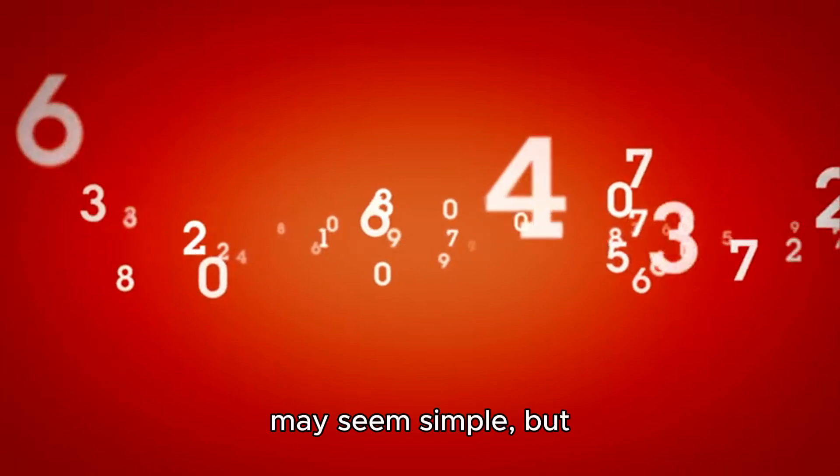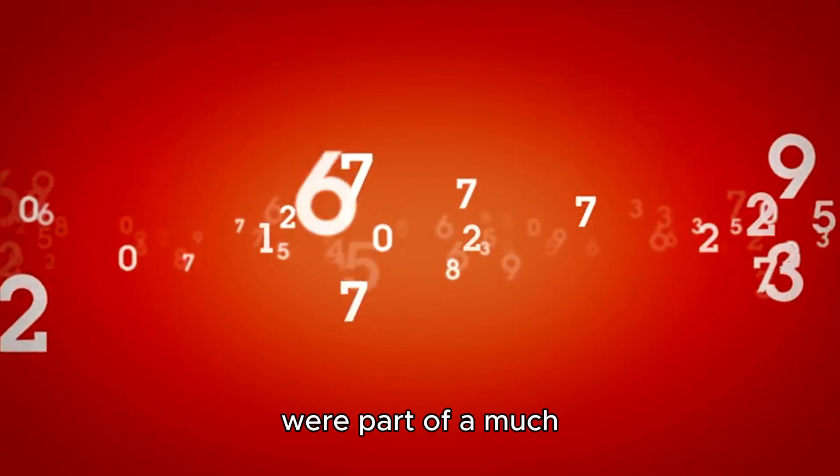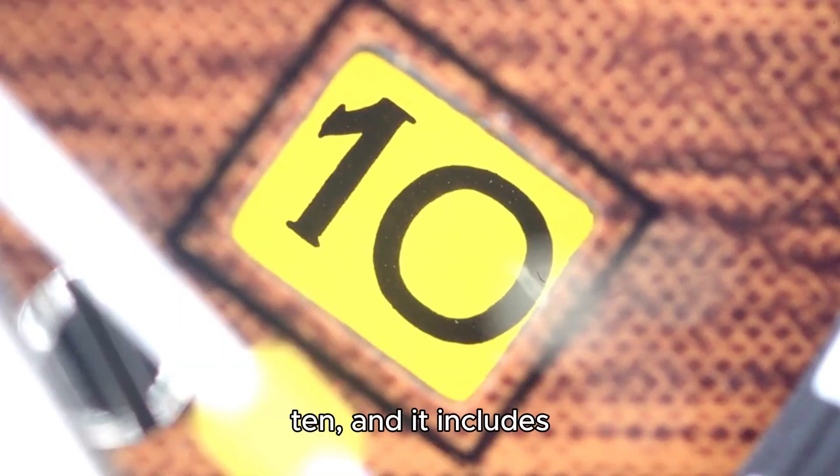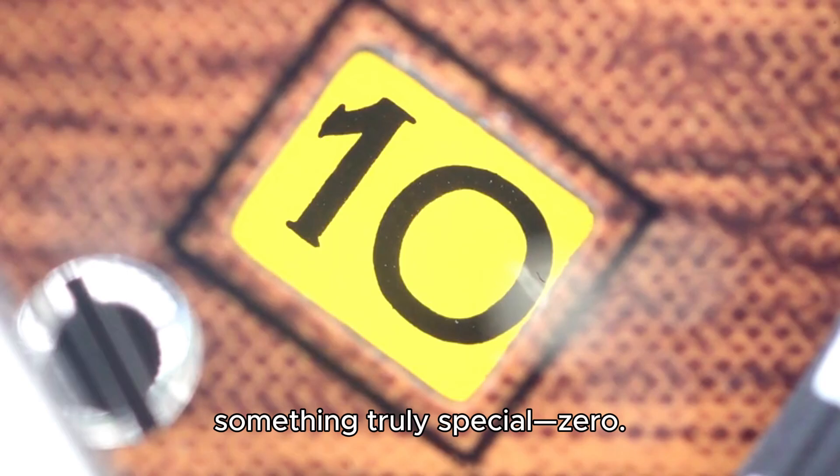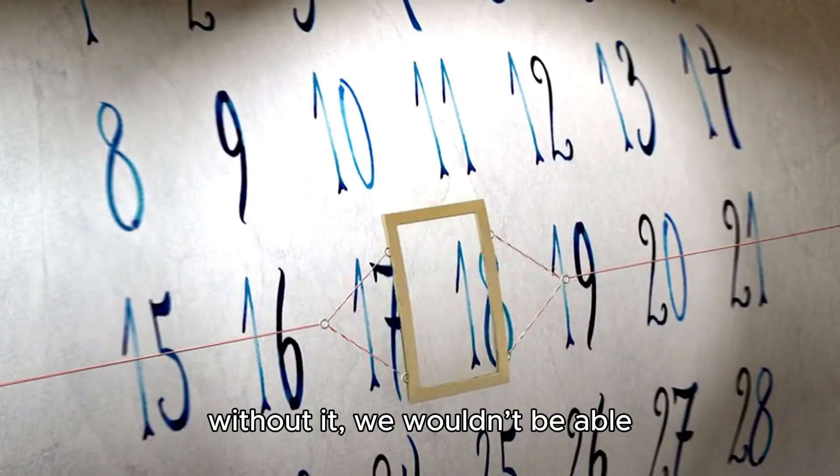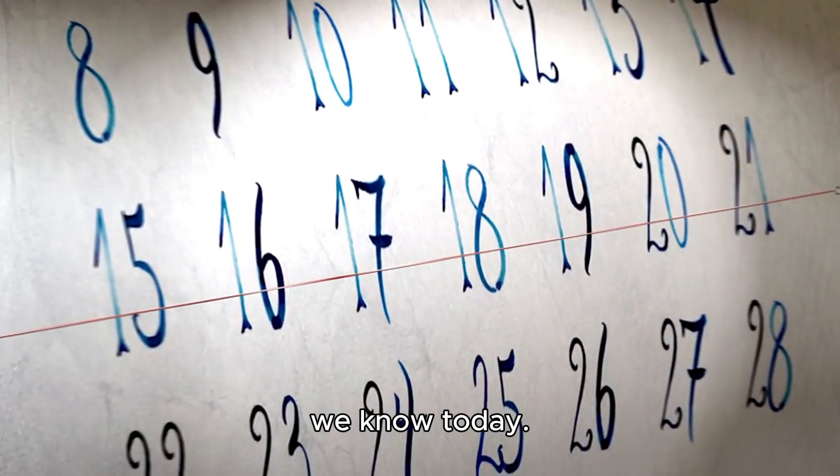Numbers like 1, 2, and 3 may seem simple, but what if I told you they were part of a much bigger magic trick? This system is based on 10, and it includes something truly special: 0, or zero. It might seem like nothing, but without it, we wouldn't be able to write large numbers or even perform most of the mathematics we know today.